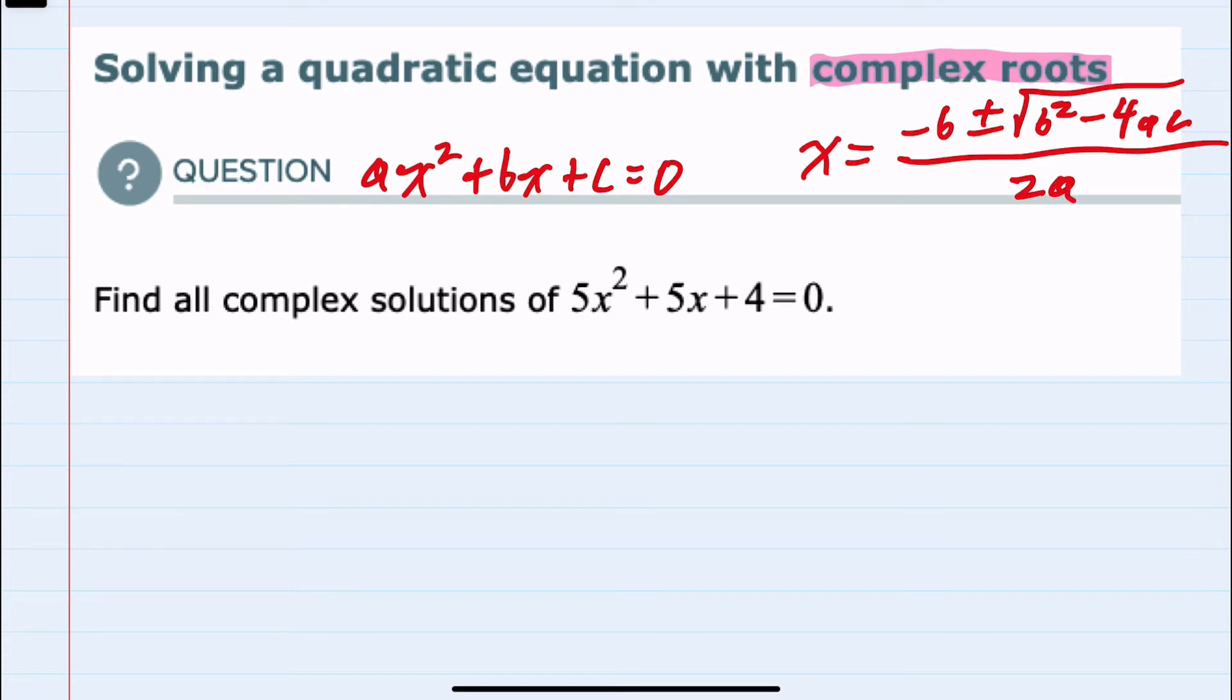And since this example is in the right form, at a glance we can see that a equals 5, also here b equals 5, and c equals 4. And having identified a, b, and c,